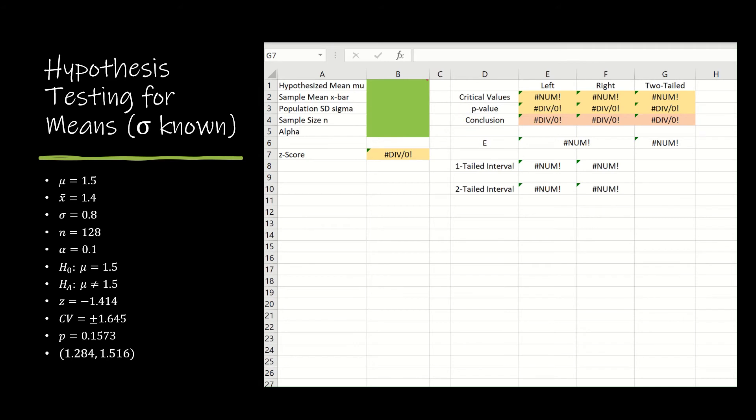Let's take a look now at how to use Excel to do all of this for us. If you'll notice, I'm using the exact same spreadsheet that I used for my one-tailed test, but I've added just a little bit. I've added a column for two-tailed, and I'm going to take you through all of that. And then I've added a row for the two-tailed interval.